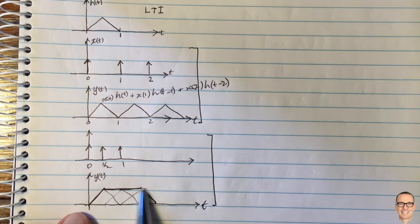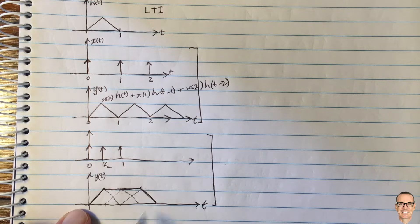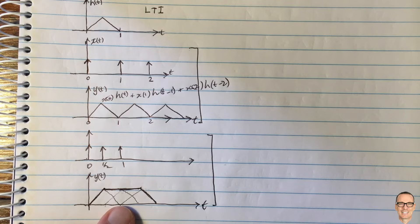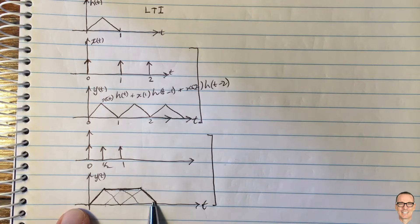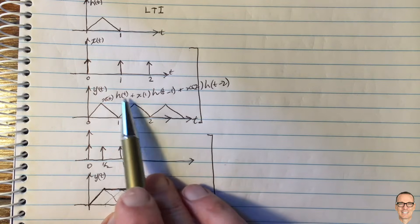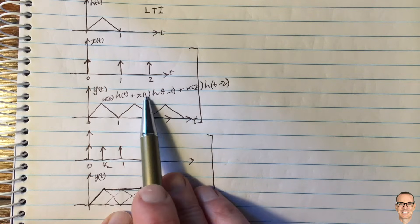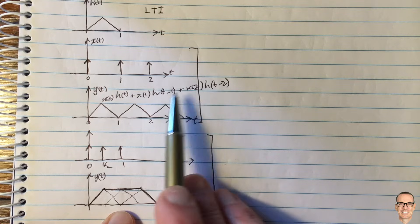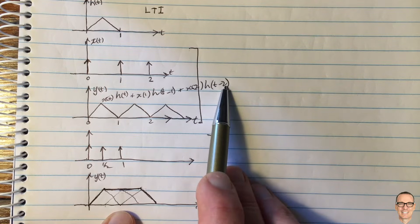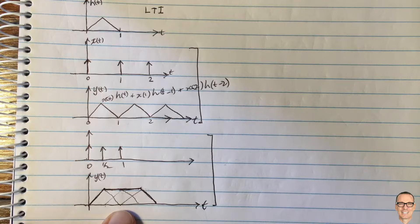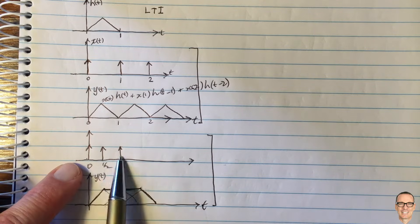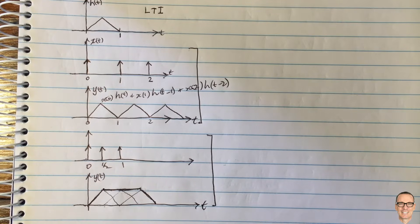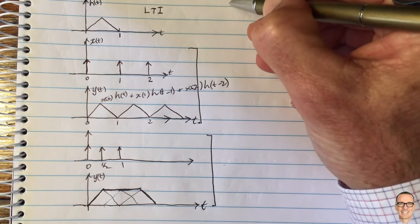Here we've got exactly the same thing except the inputs are closer together, so they're overlapping in the output — but it's still the same concept. You've still got three components adding; it's just that instead of being at 0, 1 and 2 they're now at 0, half and 1. So those terms become h(t minus one-half) and h(t minus 1). This gives us a general function, and if we had an infinite number of delta functions we can now think about general convolution.